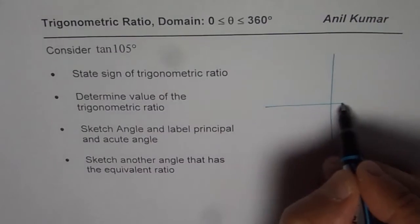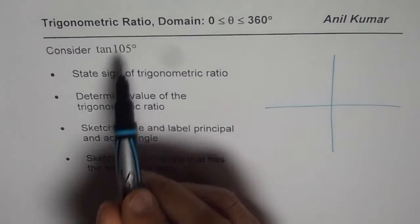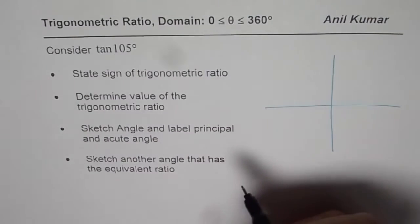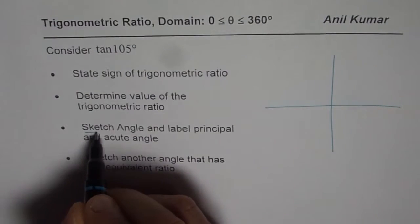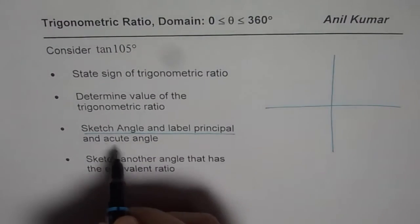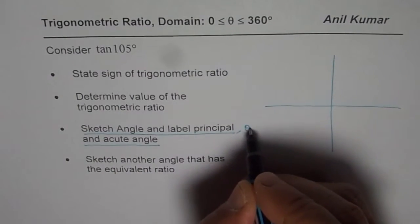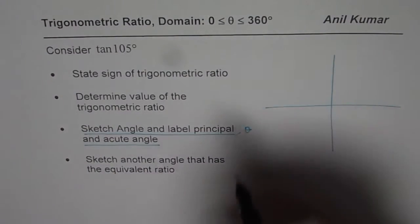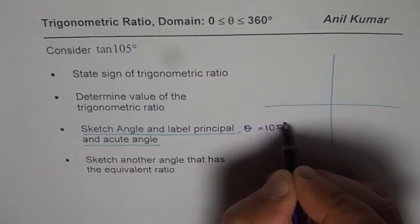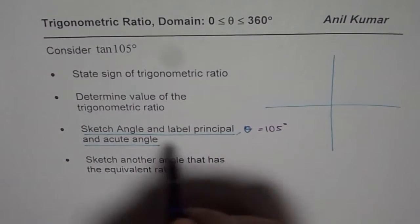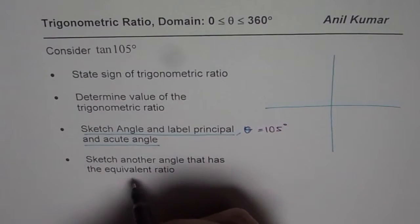I prefer to change the order a bit, we are working on tan of 105 degrees, so the principal angle is 105 degrees. So what we have here is, we will sketch angle and label principal and acute angle first. Now for us, the principal angle, let me call this as theta, let me write it in different dark ring, theta is 105 degrees for us. So we will first sketch this angle and find the acute angle, and then we will do rest of the parts.